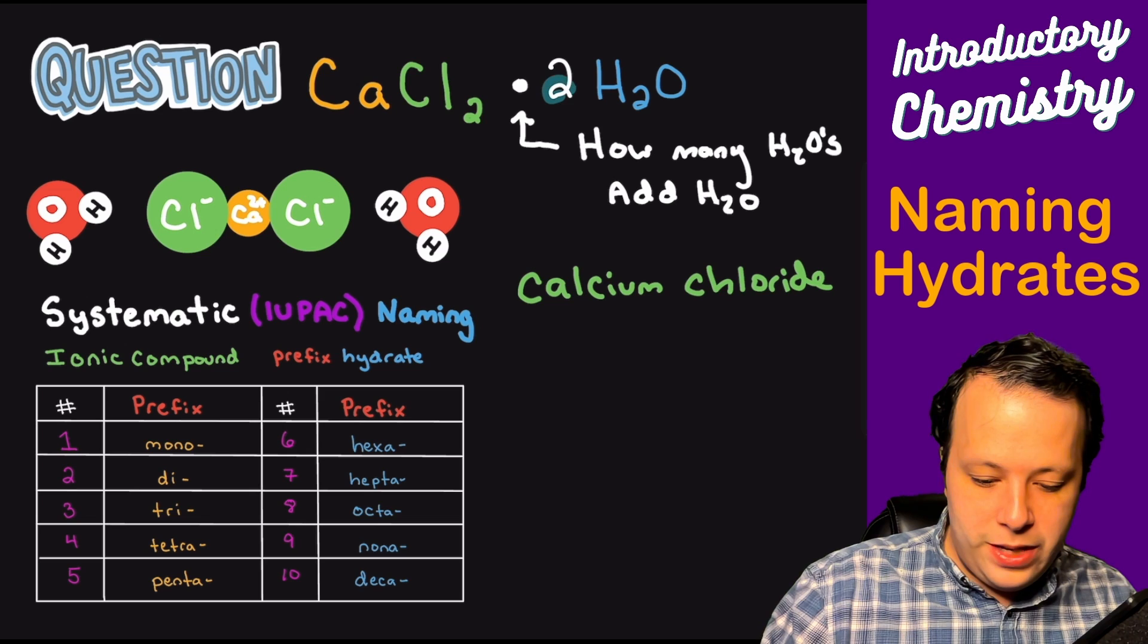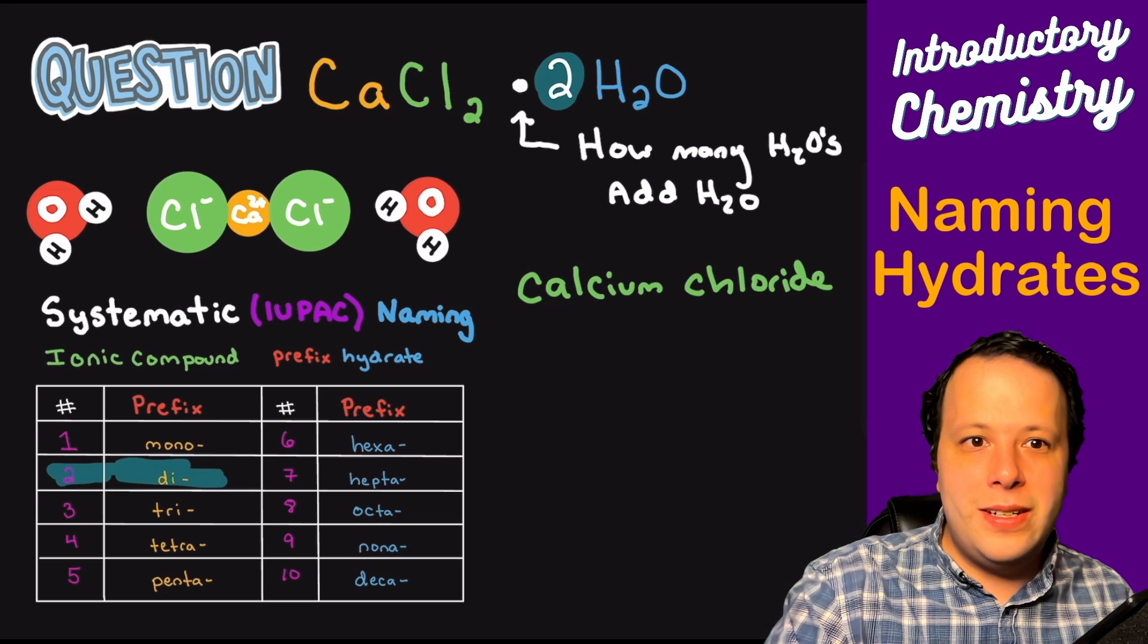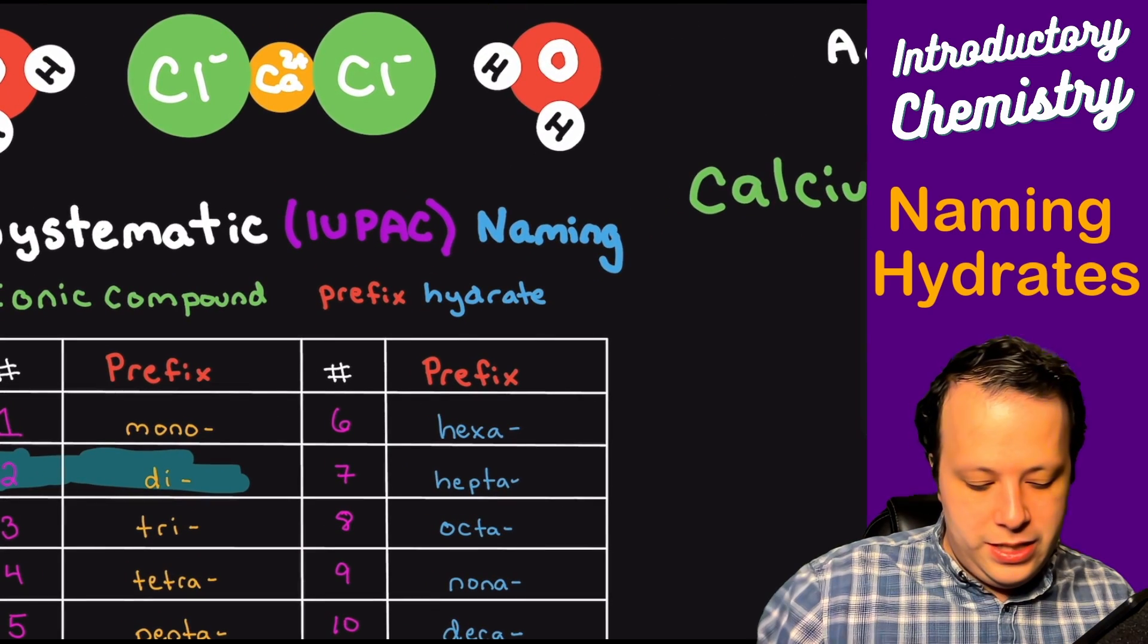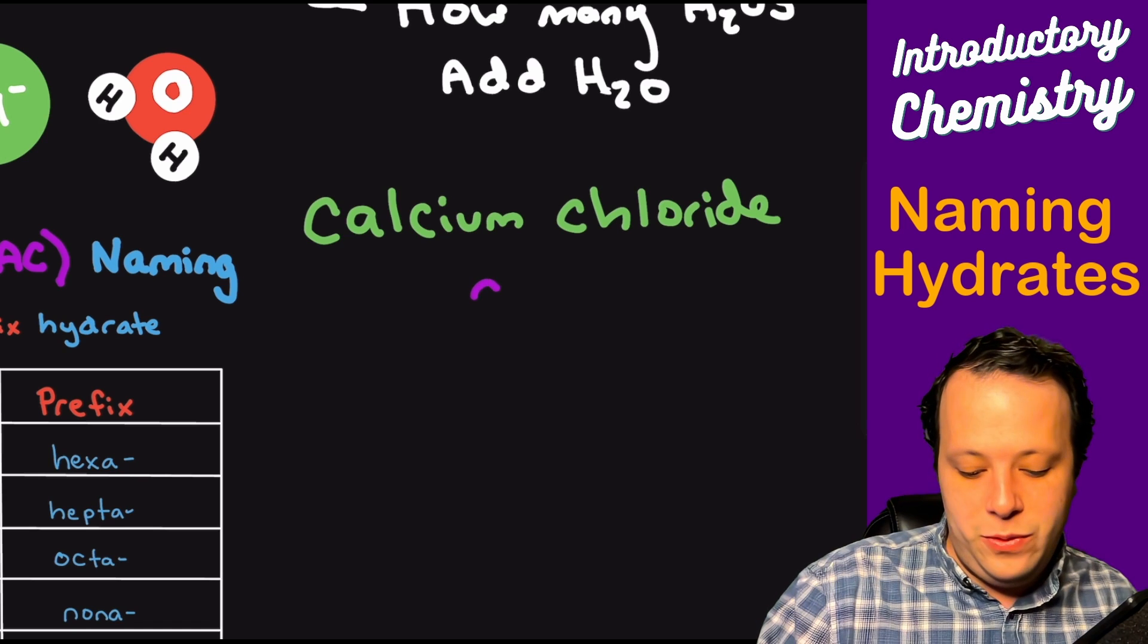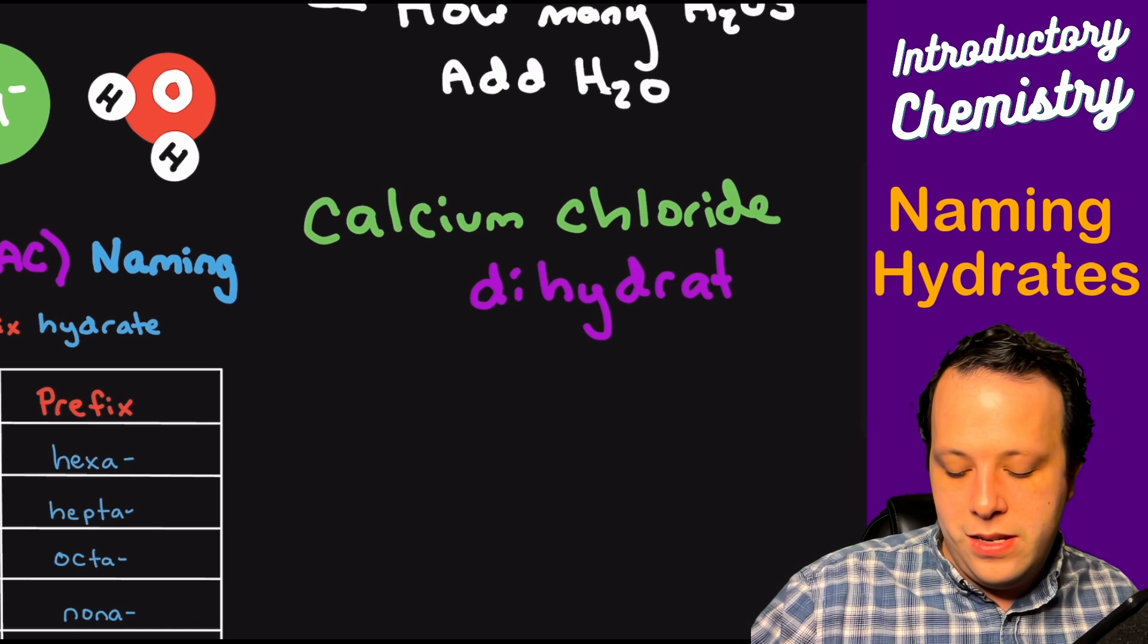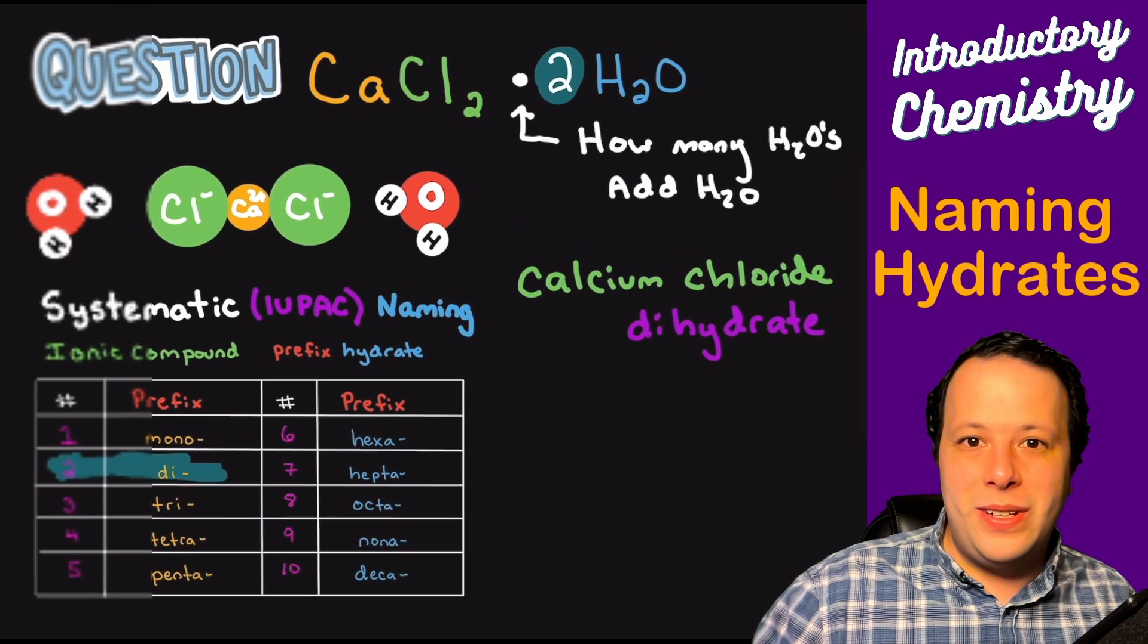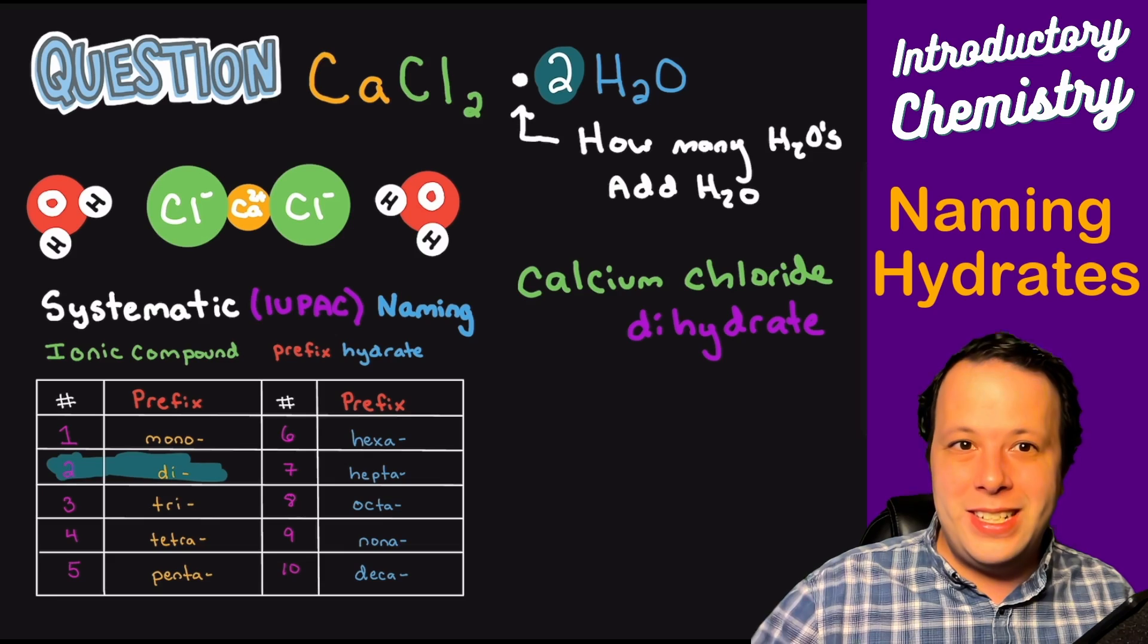Well, we're going to look and we notice that we have two waters. So we're going to use the di prefix here. So with that being said, we'll have calcium chloride dihydrate would be the name. So dihydrate. And that would be the name of our molecule here. And that we have those two waters surrounding calcium chloride.